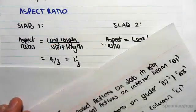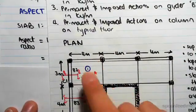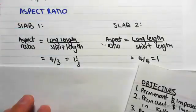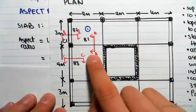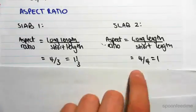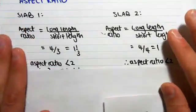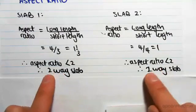So for slab 1, the long length is 4 meters, the short length is 3 meters, so 4/3 or 1 and a third. For slab 2, it's a square, so it's 4 by 4, so it doesn't really matter, 4 by 4 is 1. So in both cases, the aspect ratio is less than 2, and therefore the slab behaves like a two-way slab.